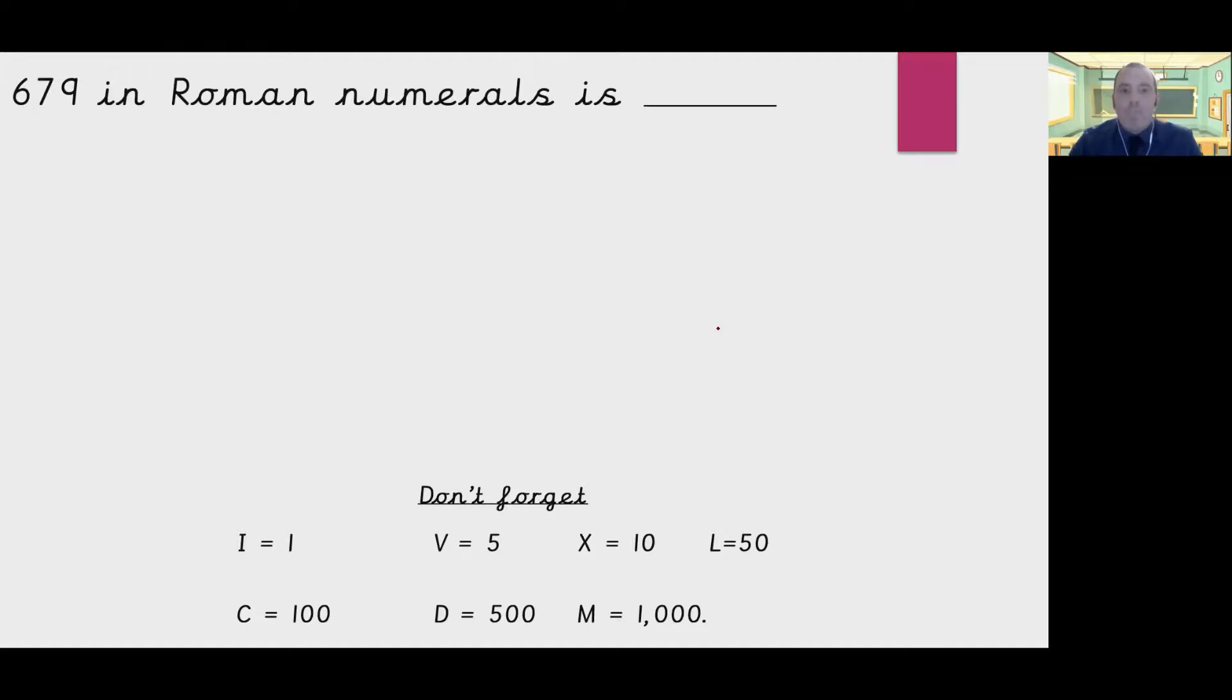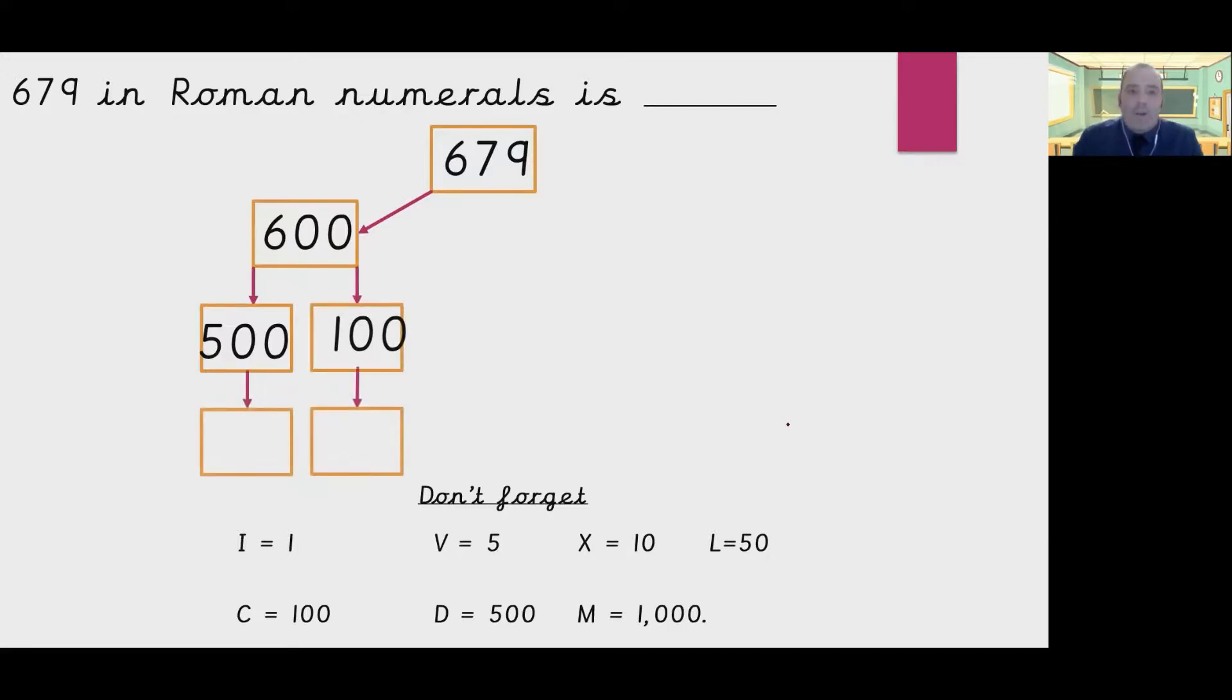So moving forward, we build numbers using the Roman numeral system. So we're going to have a go at doing 679 as Roman numerals. Before we do that, I'm going to partition my number. I'm going to take my hundreds and split those into values that I know I've got with Roman numerals. So I have a value for 500, I have a value for 100. So I need to work out what letters will go in the boxes. I've got D for 500, so I'm going to put that in here, and I've got C for 100. They go this way around because we're adding on this time, so we're making the number bigger.